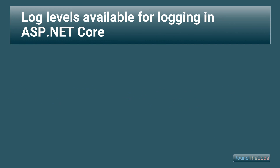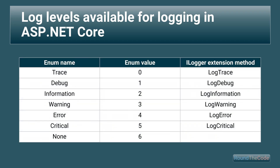With logging in .NET, it uses the LogLevel enum which is included in the Microsoft.Extensions.Logging namespace. These are the LogLevel enum fields that are available, including their name, value, and the ILogger extension method we can use to write a log at that level.